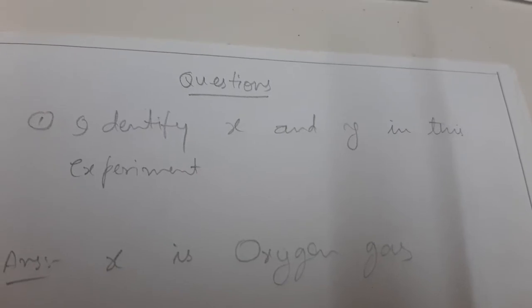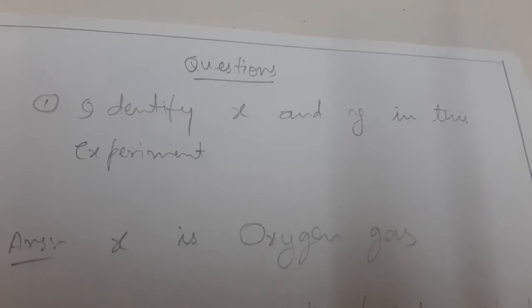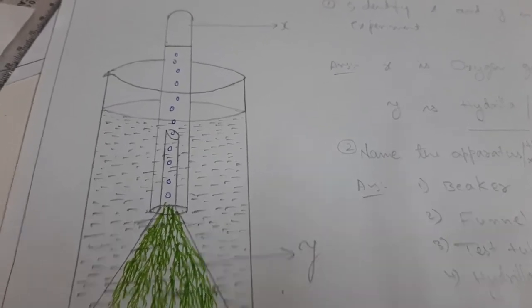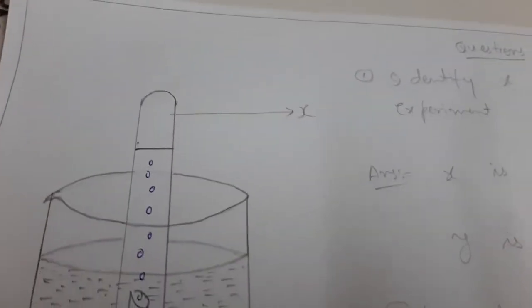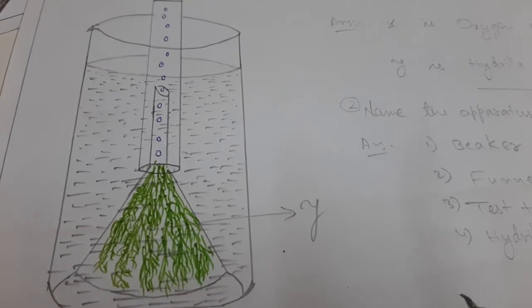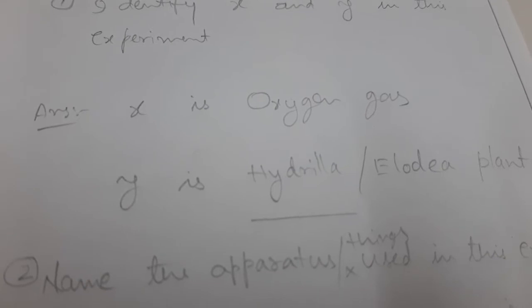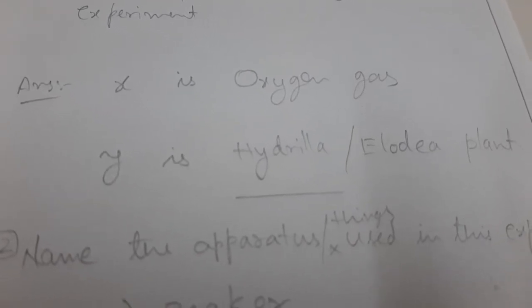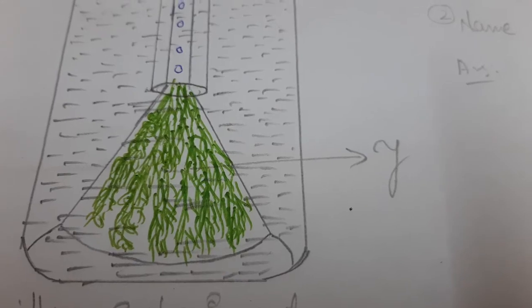First question: identify X and Y in this experiment. Students, observe it. Above there is X and below here it is Y. So what is X and what is Y? Answer: X is oxygen gas and Y is Hydrilla plant or Elodia plant.